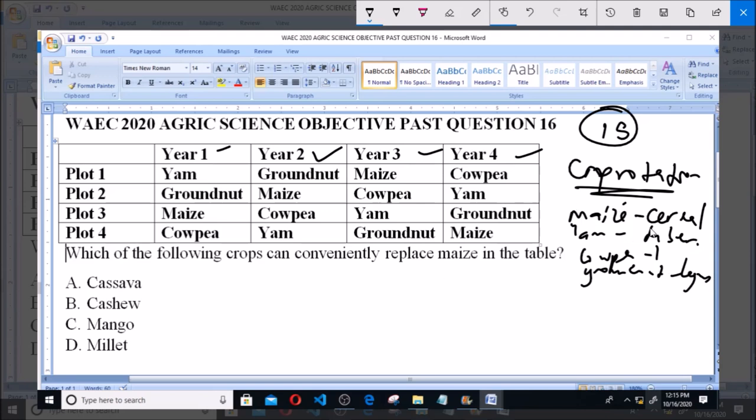So, you plant a specific type of crop. Now, if you have to replace maize on the table, you will need to replace it with another cereal. So, for us to pick out the one that can conveniently replace maize in the table, pick out one that is a cereal that belongs to the same class as maize, and that can conveniently replace maize.